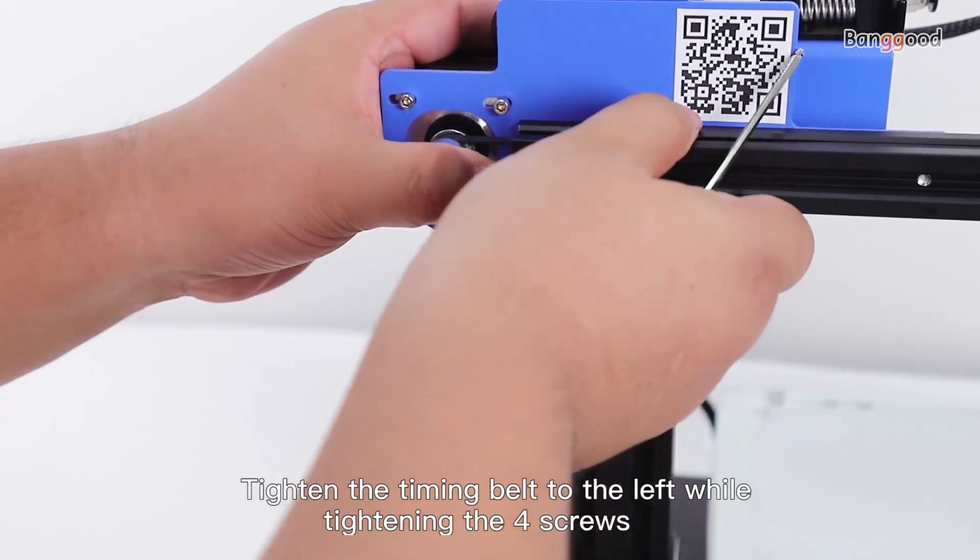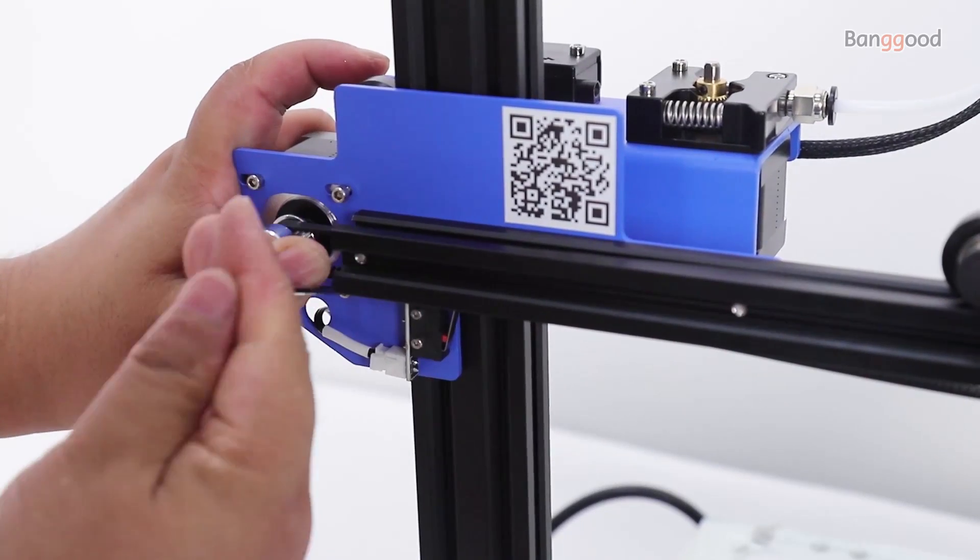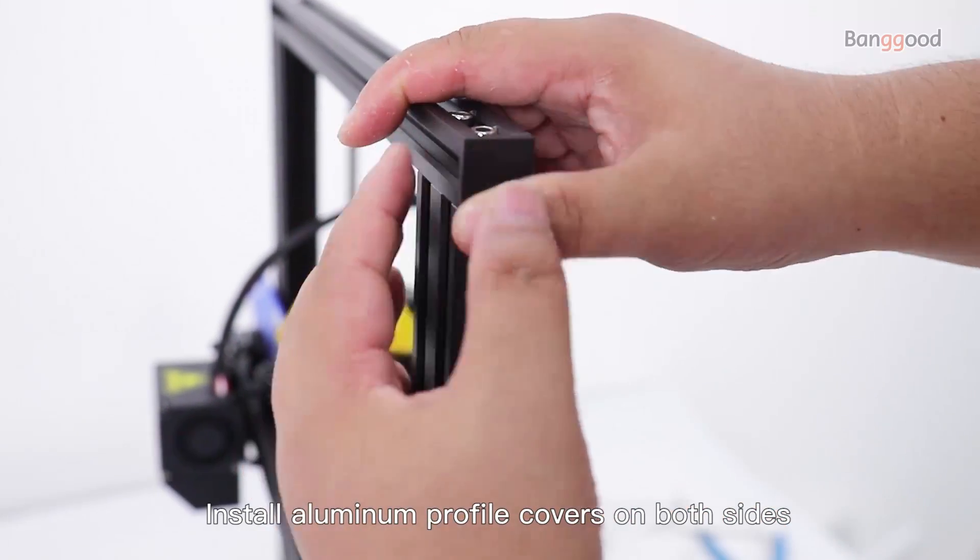Tighten the timing belt to the left while tightening the four screws. Install aluminum profile covers on both sides.